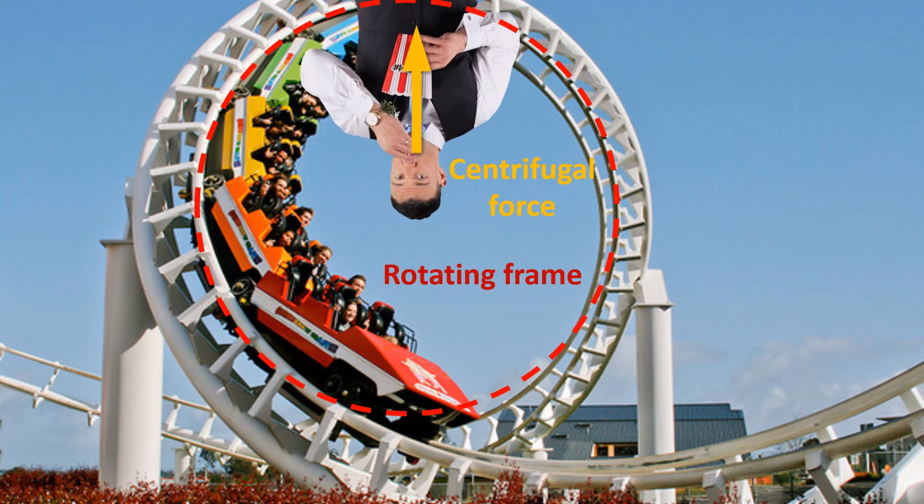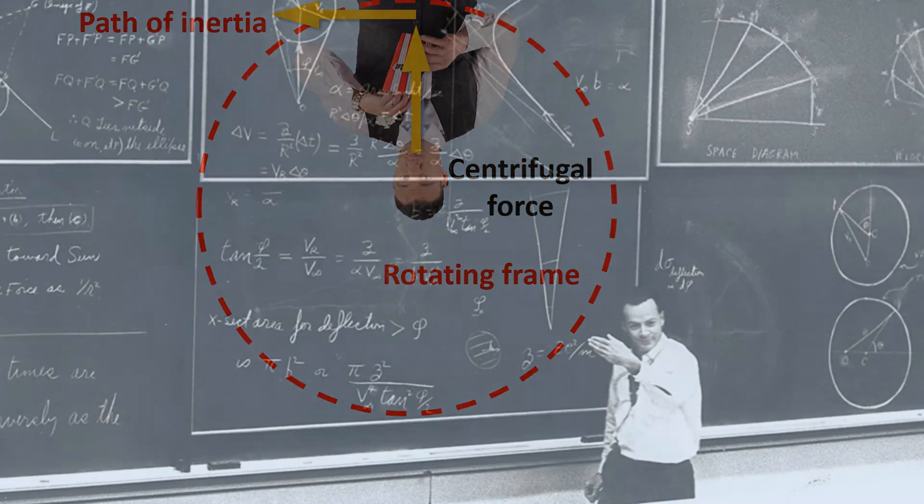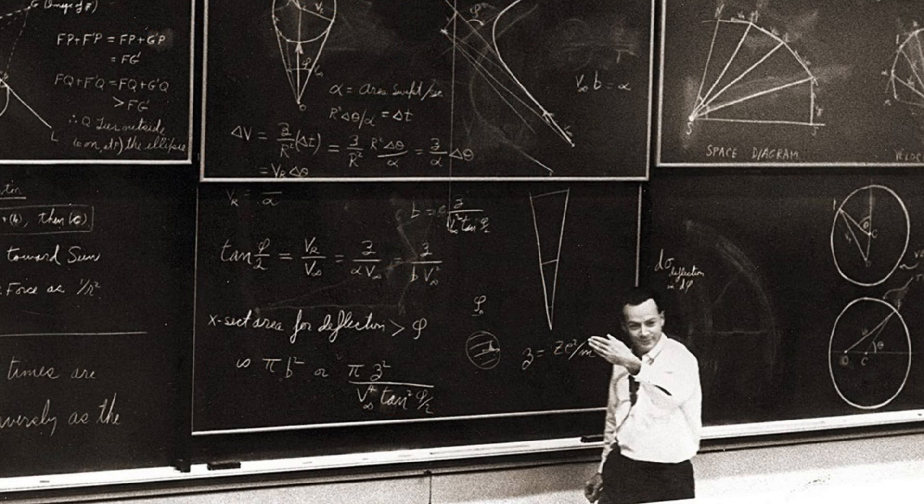This centrifugal force can even keep the popcorn in the bag. Intuitively, the origin of the centrifugal force can be understood as the tendency of the object to resist any change in its path of inertia. Certainly, the centrifugal force is real from the perspective of the person in the rotating frame, and we feel it in our car when it makes a sharp turn. So we feel it, but can we mathematically derive the form of the centrifugal force?